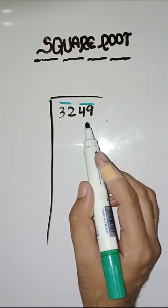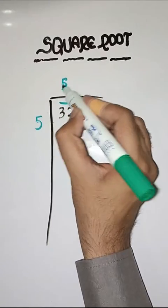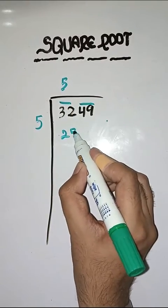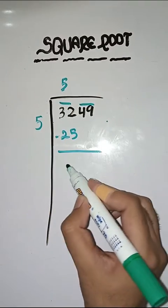So we take a number 5. 5 times 5 is 25. Minus, we have 7.